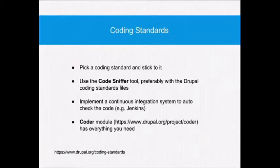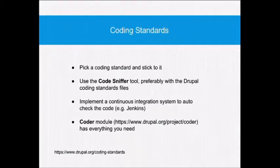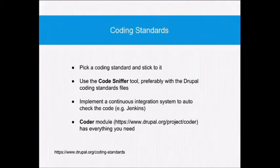Coding standards. It's good to pick a coding standard and stick to it — it just makes the code more readable. It can be as simple as the number of spaces in code, like if there's a space inside the bracket of an if statement. It might seem trivial, but if everybody in your team is writing code with the same standard, it makes portability much easier. We actually have a continuous integration environment called Jenkins at Access, which auto-checks the code in the dev branch as we're doing the work — it checks for syntax errors and also goes through checking for coding standards.